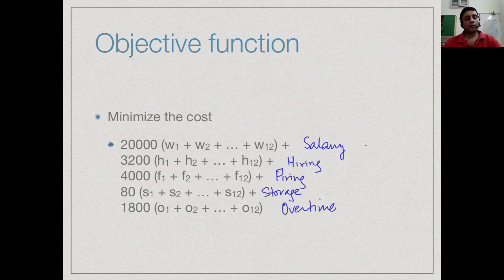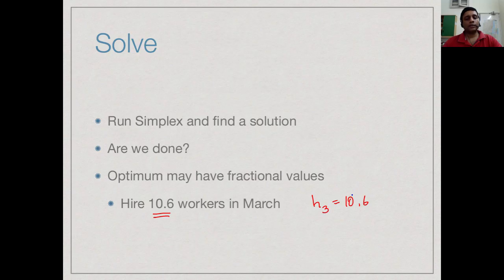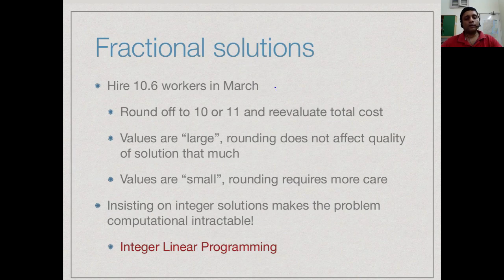This fairly complex production problem — with demand, hiring, firing, and productivity — can be set up with 74 variables and a cost function and fed to simplex to get an answer. However, we might get a non-integer result, such as h3 equal to 10.6, meaning we must hire a fractional number of people — which is obviously impossible. We can round to the nearest integer (10 or 11) and reevaluate the cost; this is called integer rounding.